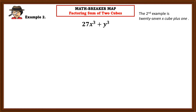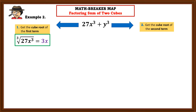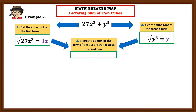Let's have another example: 27x³ + y³. This is a sum of two perfect cubes, since 27 is a perfect cube and so is y³ (with coefficient 1, which is also a perfect cube). Step 1: get the cube root of the first term. The cube root of 27x³ equals 3x, because 3x multiplied by itself three times gives 27x³. Step 2: the cube root of the second term y³ is y. Step 3: express as a sum — that is 3x + y.